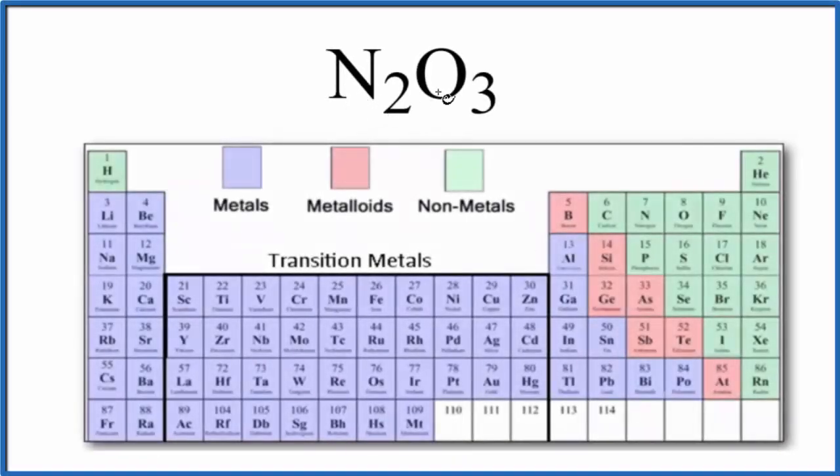The question is whether N2O3 is an ionic or covalent compound. This is dinitrogen trioxide.